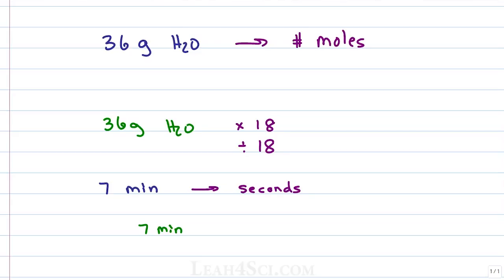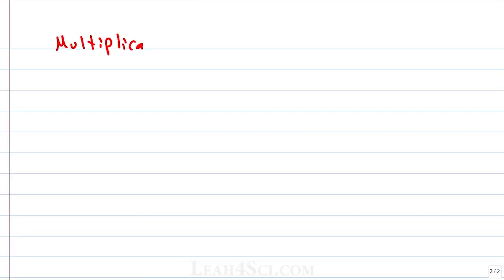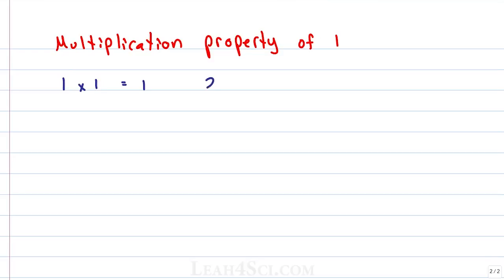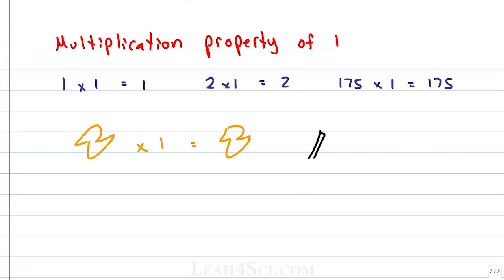On the MCAT you don't have a lot of time and you definitely don't have a calculator, so you need to get past it quickly. The shortcut comes from the multiplication property of 1: any number multiplied by 1 is equal to itself. So 1 times 1 equals 1, 2 times 1 equals 2, 175 times 1 equals 175. It doesn't have to be a simple number — you can take a duck multiplied by 1 and you get a duck, or a pencil multiplied by 1 and you get a pencil. No matter what you multiply, as long as you multiply it by 1, it stays the same.